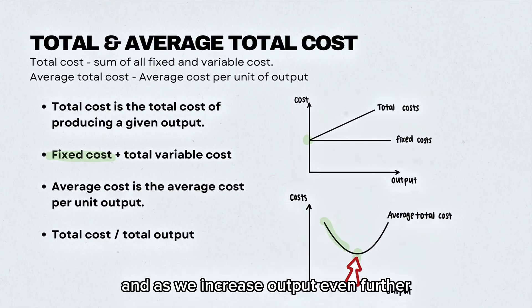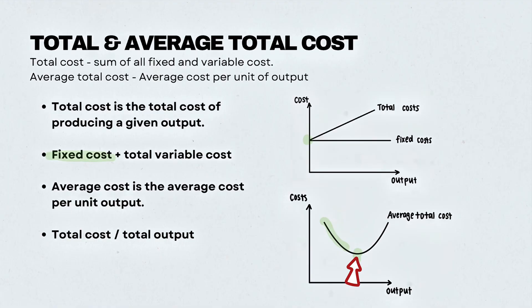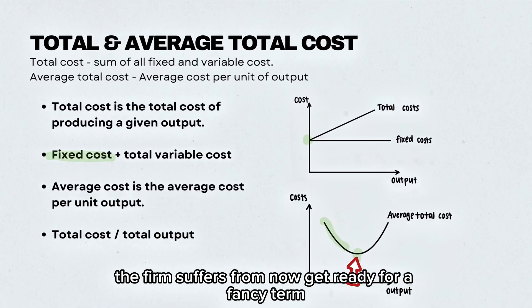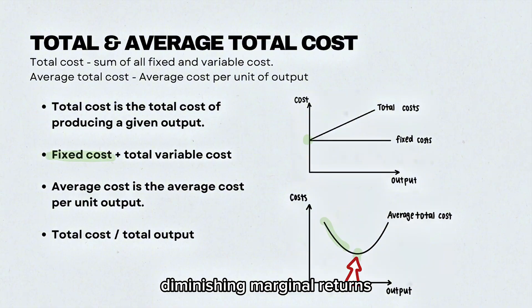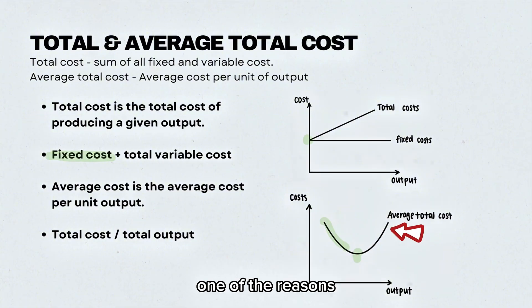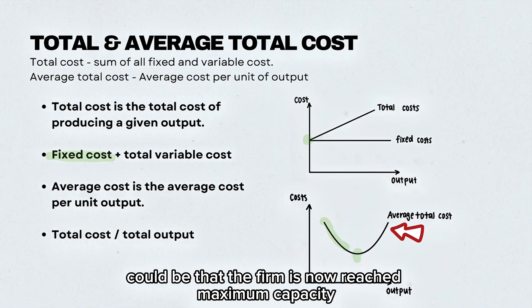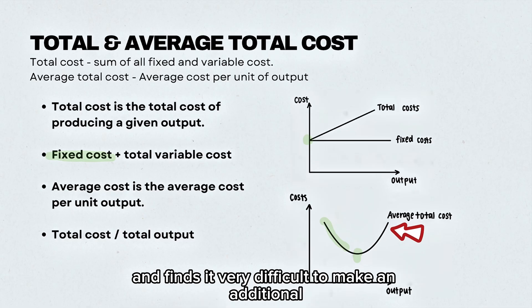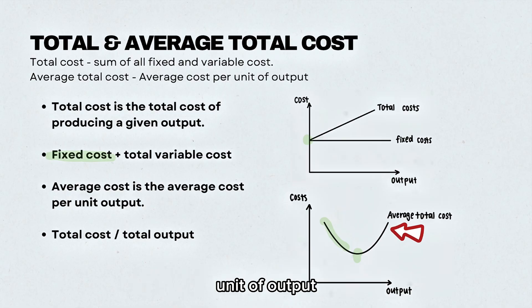And as we increase output even further, the firm suffers from — now get ready for a fancy term — diminishing marginal returns. One of the reasons could be that the firm has now reached maximum capacity and finds it very difficult to make an additional unit of output.